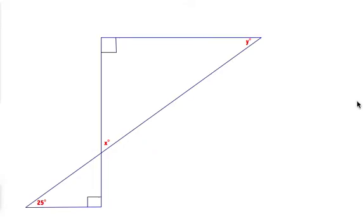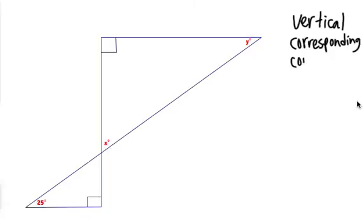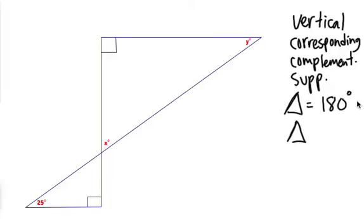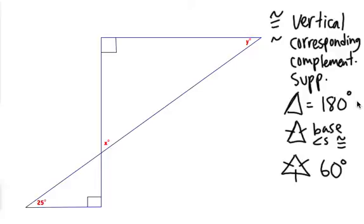Let's use all of this information to figure out some missing angle problems. Remember all the things we know: vertical angles are congruent, corresponding angles are congruent, complementary angles sum to 90, supplementary angles sum to 180, triangles equal 180, isosceles base angles are congruent, and equilateral angles are all 60 degrees. Try to use that to figure out what X and Y are — you need a reason for everything. Hit play when you think you've figured it out.